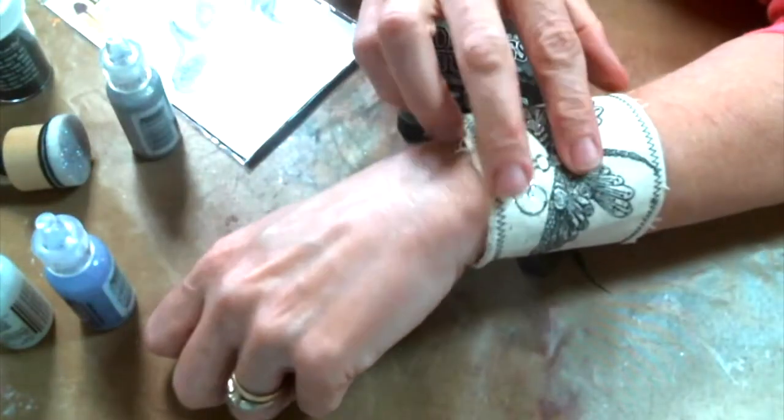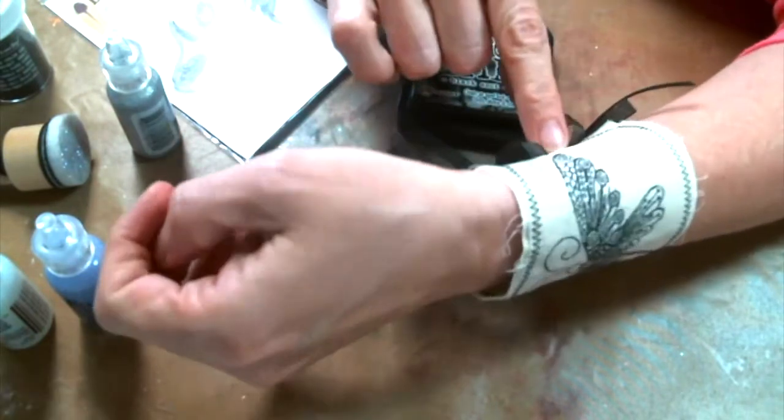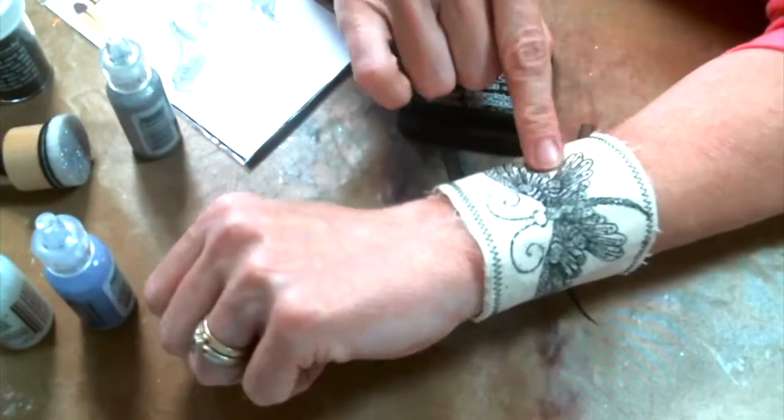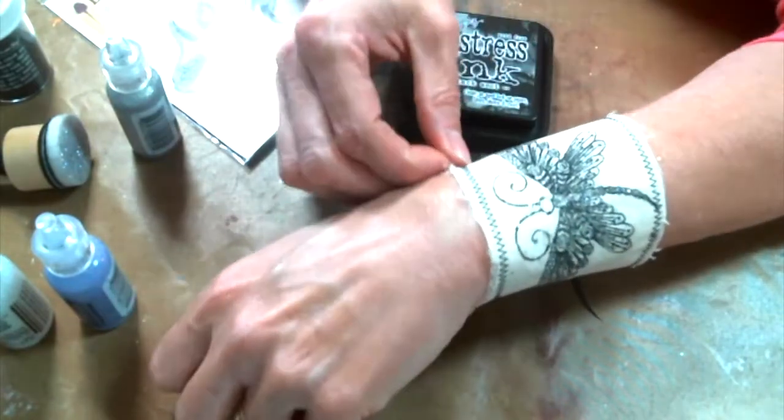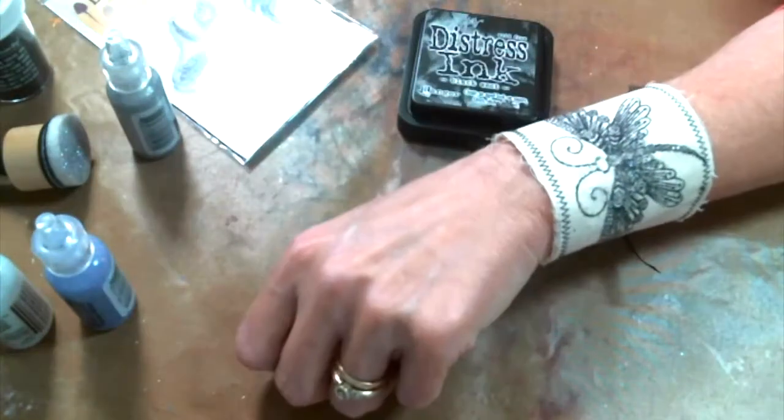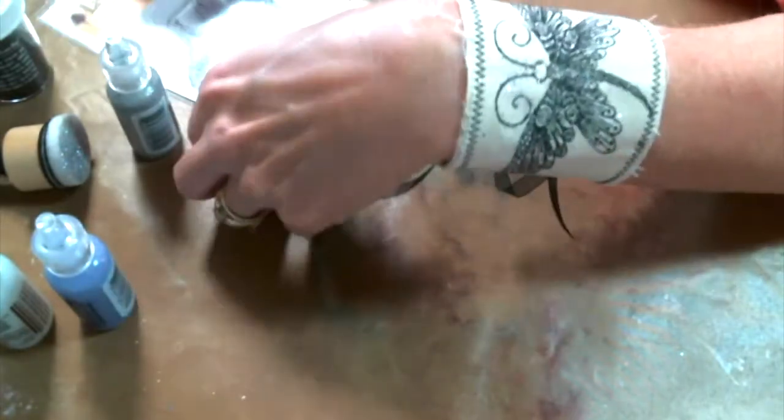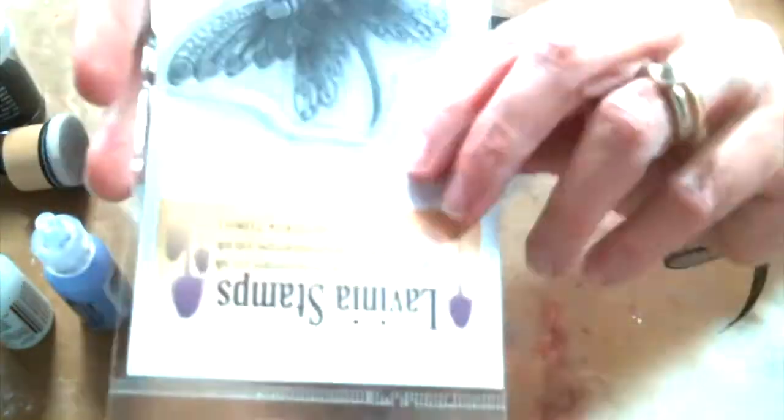So what you'll need is some muslin, and you're going to have to measure it on your wrist. My piece of muslin was about five and three-quarter inches long, and I didn't even measure the width, but you just want it to be long enough to fit whatever stamp you're using. I used this beautiful Zen butterfly.